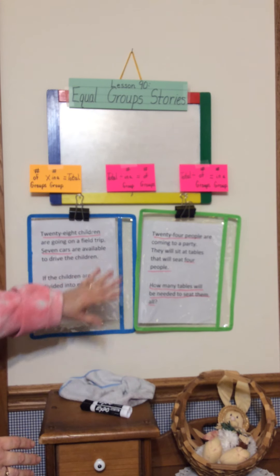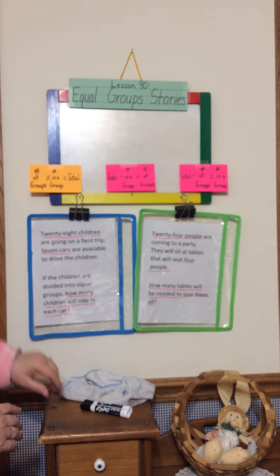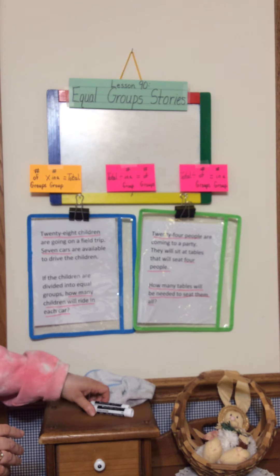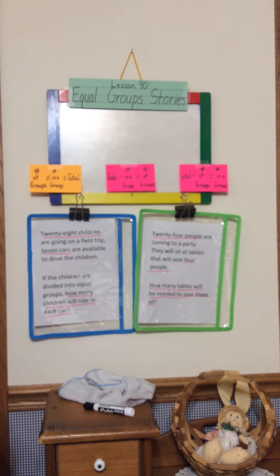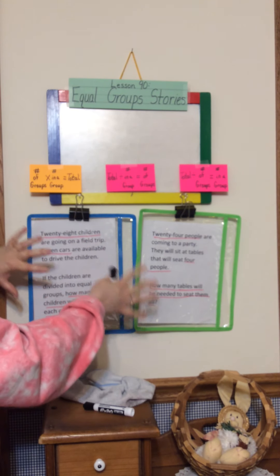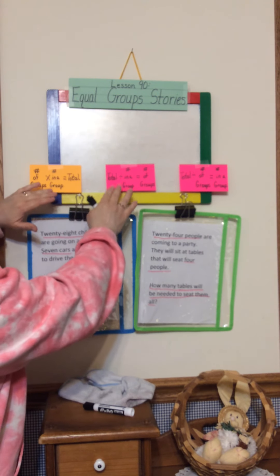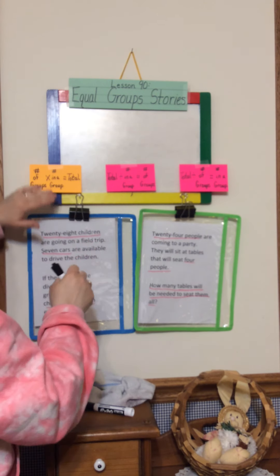I've already put some stories up here and have highlighted some things that we need to look at in our story. When we have word problems, we have some different options. The orange card has us multiplying. If we have a number of groups and a number in a group, we multiply to equal the total.